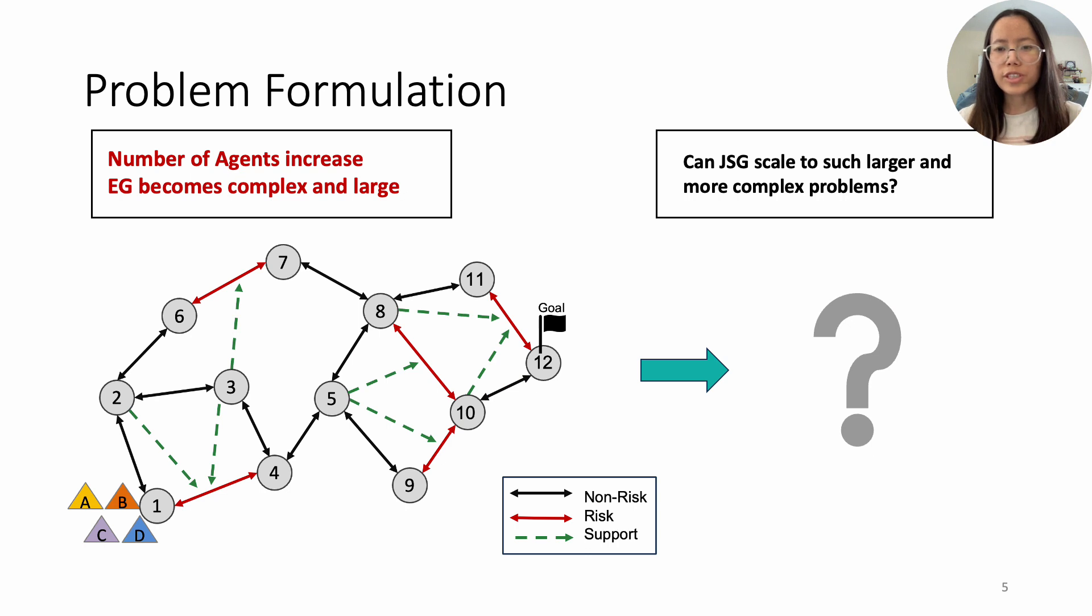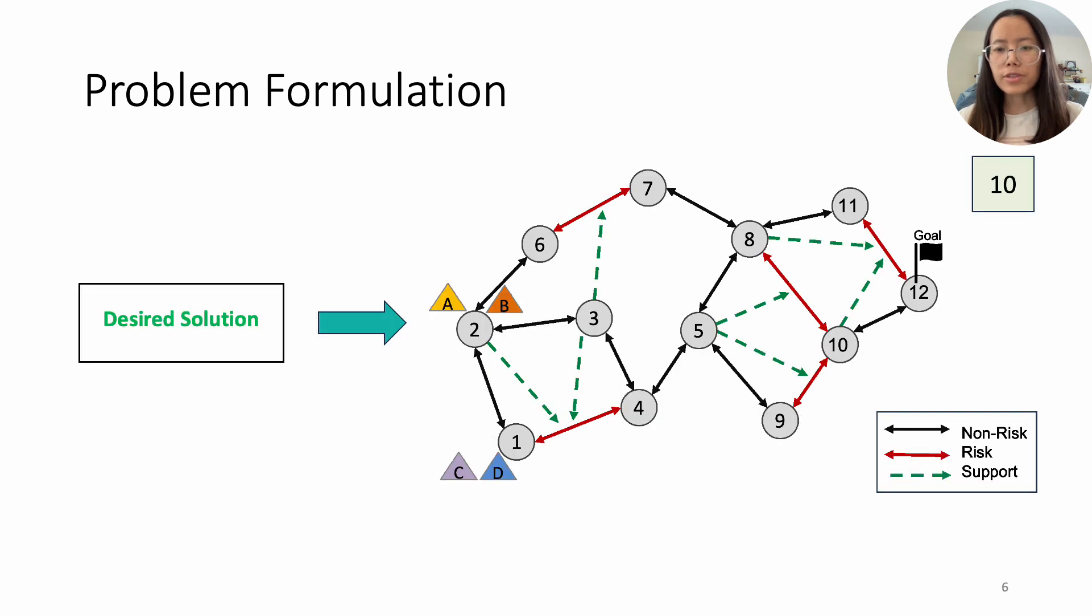This brings us to the question: can GSG provide efficient solution if the number of agents increase and EG becomes more complex? Can we get our desired solution where agents coordinate in risky paths to minimize cost to reach the goal? Unfortunately, GSG becomes very slow when facing more agents and larger graphs.